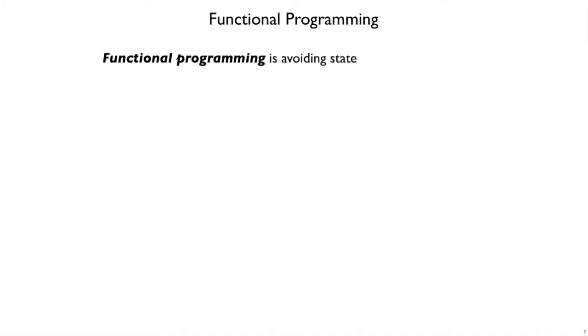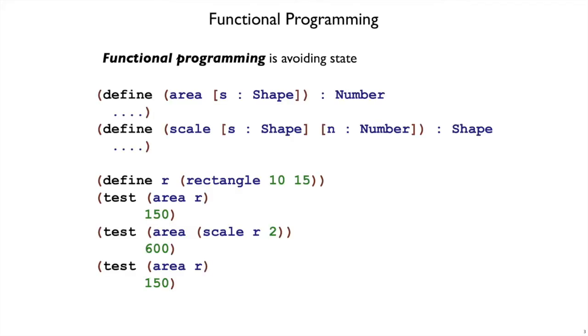By functional programming, we normally mean avoiding state. That is, if we have a scale function that takes a shape and a number to scale that shape by,